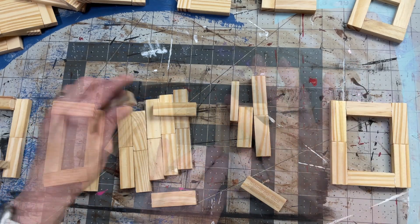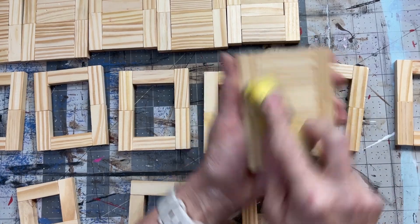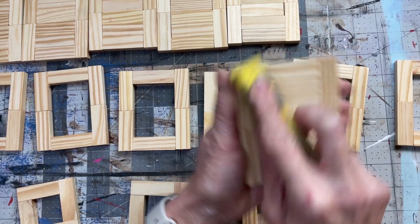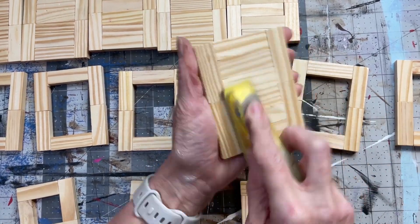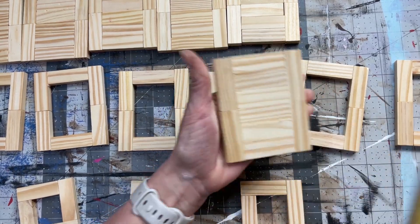So each lantern so far has two platforms, two O's, and the square. And now I'm just going to sand all my pieces lightly to get off any excess wood glue.